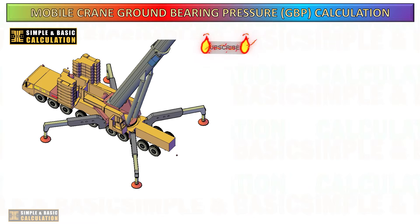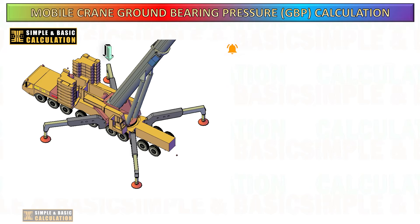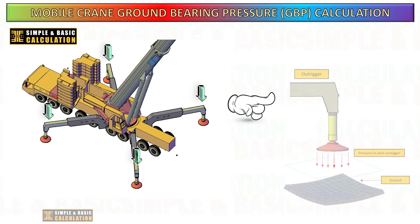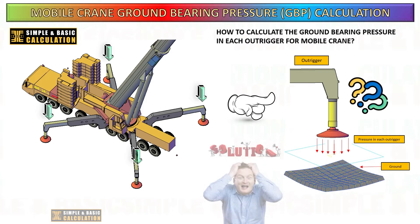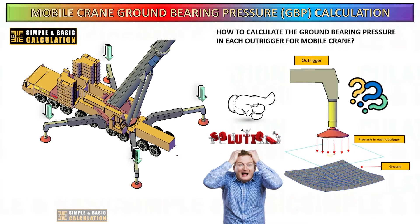Hello. This video is a continuation of the previous video, which was about how to manually calculate the ground bearing pressure for a mobile crane. The data shown in this video comes from the calculations carried out in the previous video. If you have not yet watched it, I recommend watching it first to understand the source of the data. I will include the hyperlink to that video in the description.